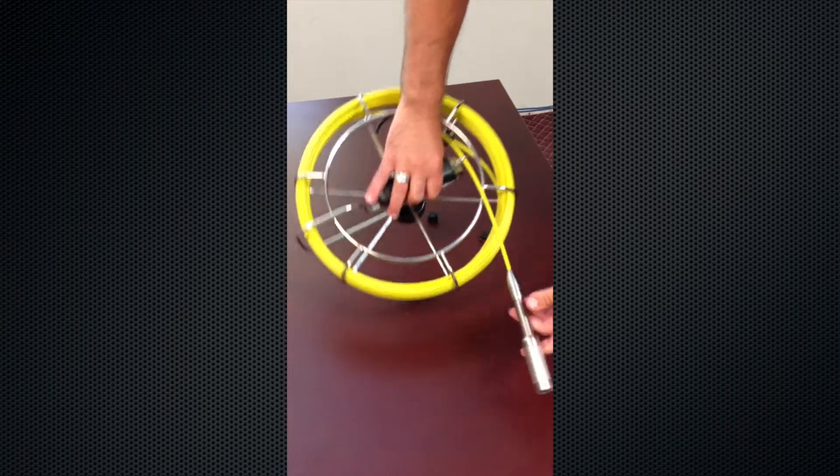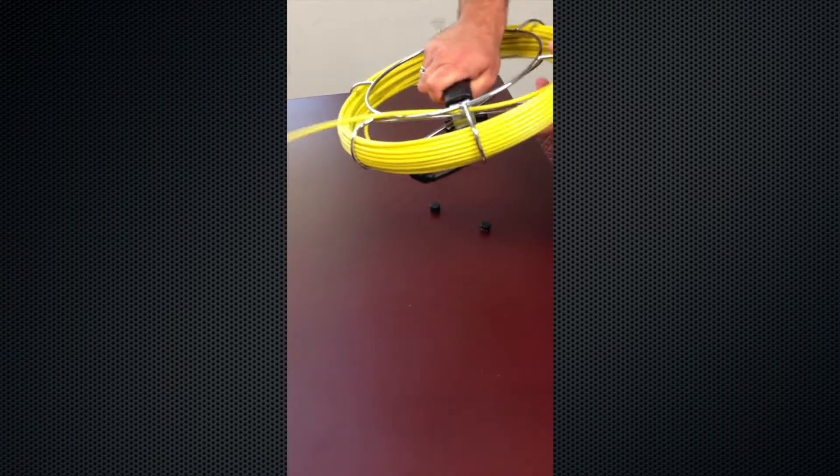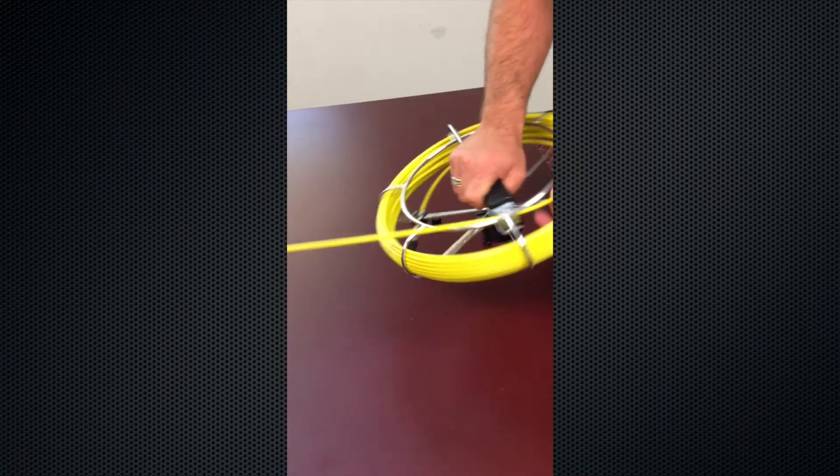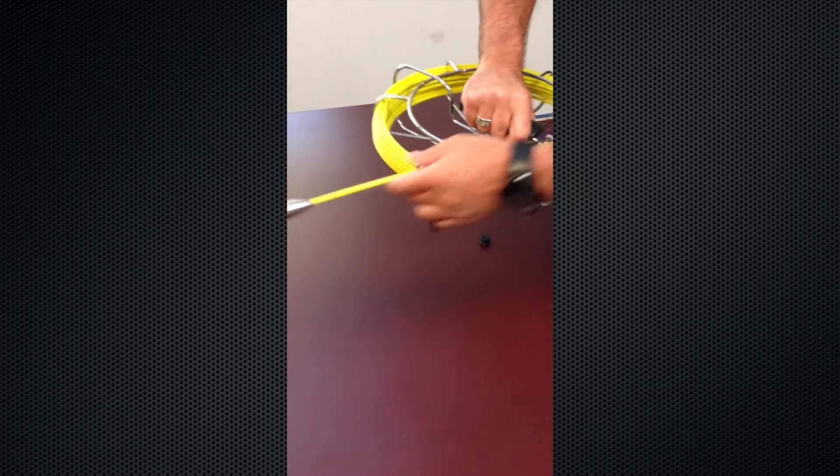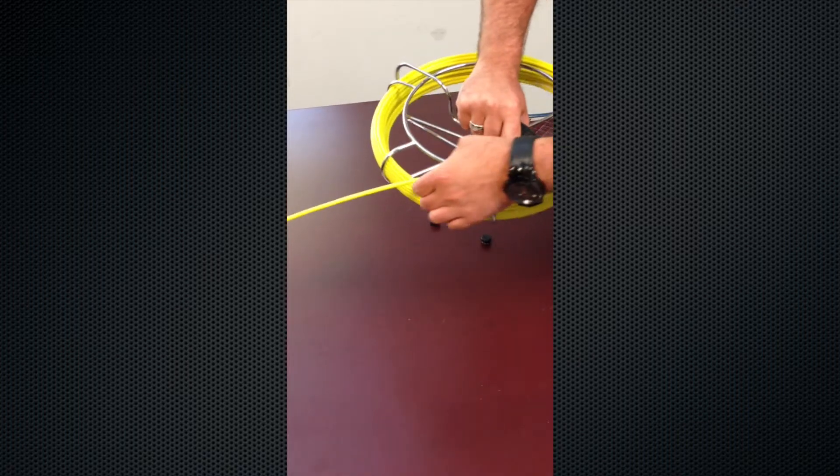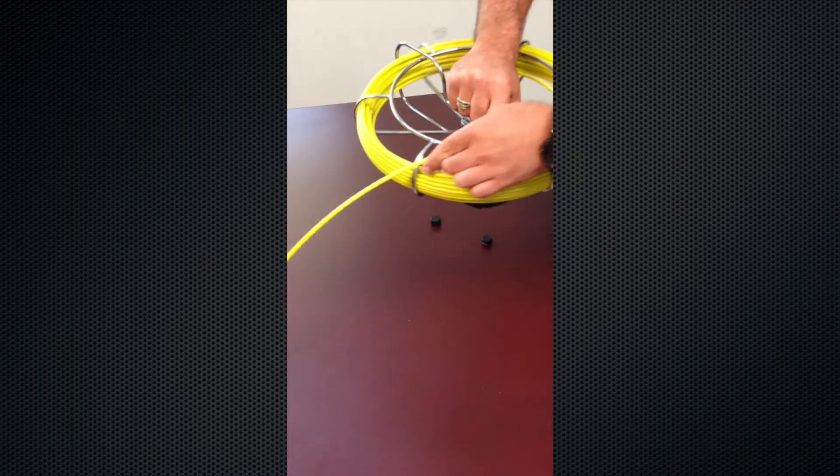Once it's on the reel, you should be able to simply spin it out. When you recoil it, spin it back in. It's easier to push or pull the probe using the cable when pulling it back in or out.